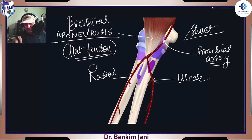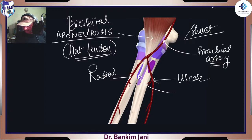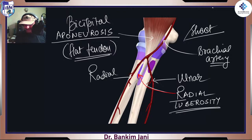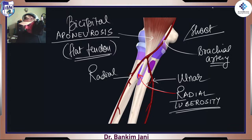The bicipital aponeurosis comes from the top and lands again on a special seat with a royal name — that is the radial tuberosity. It is on the radial bone, the radius. The bicipital aponeurosis lands on the radial tuberosity. This much is sufficient; let's move to the next one.